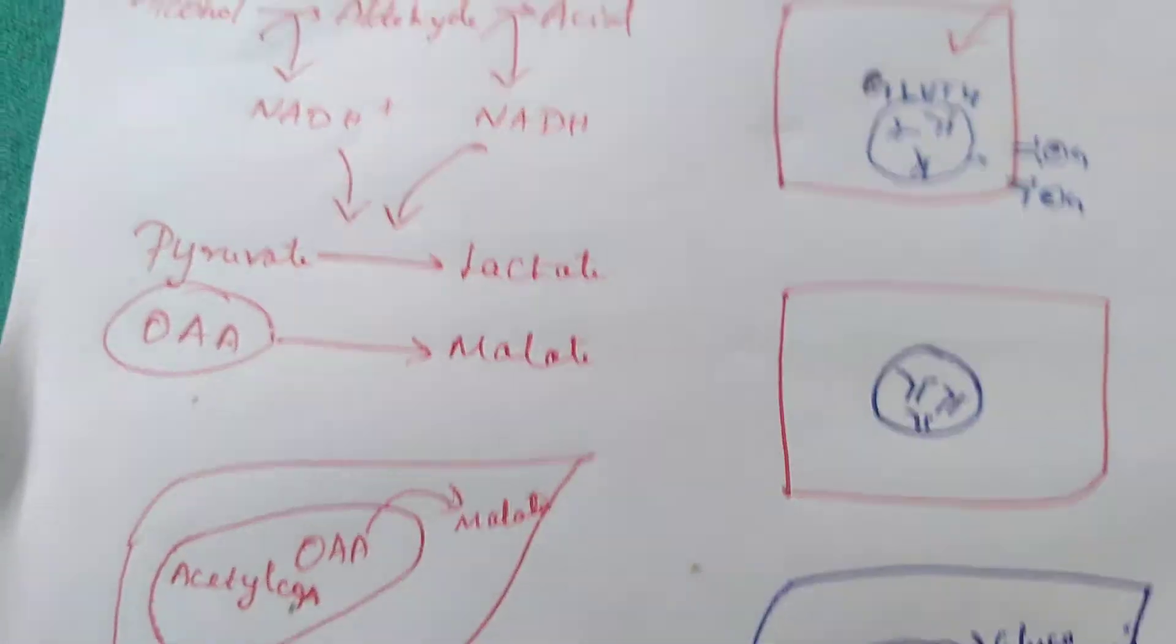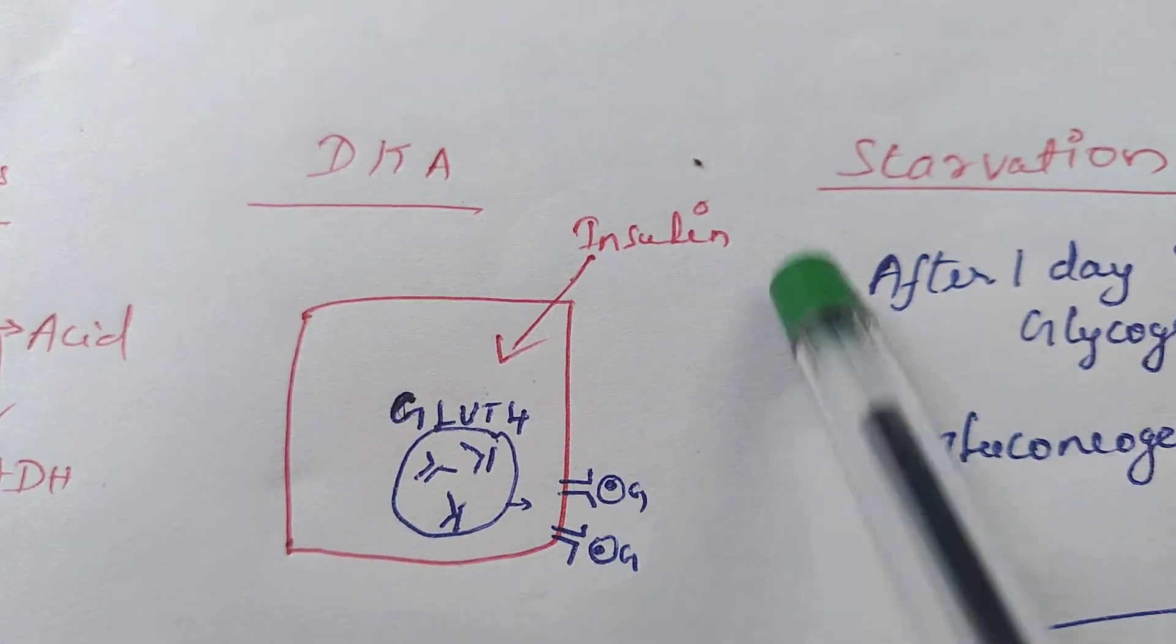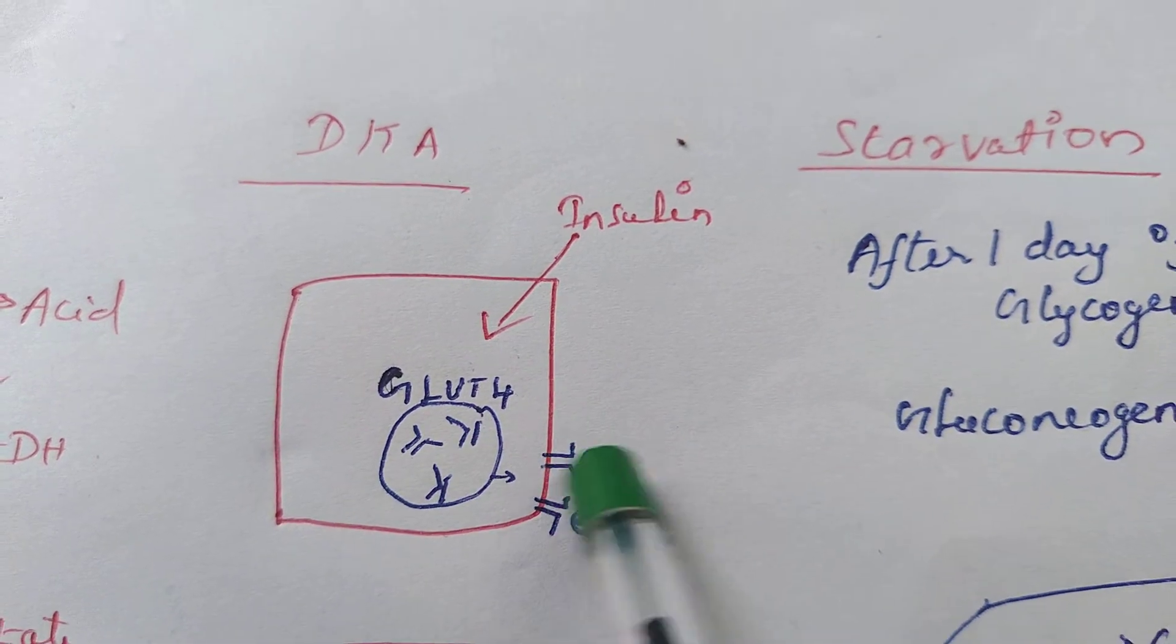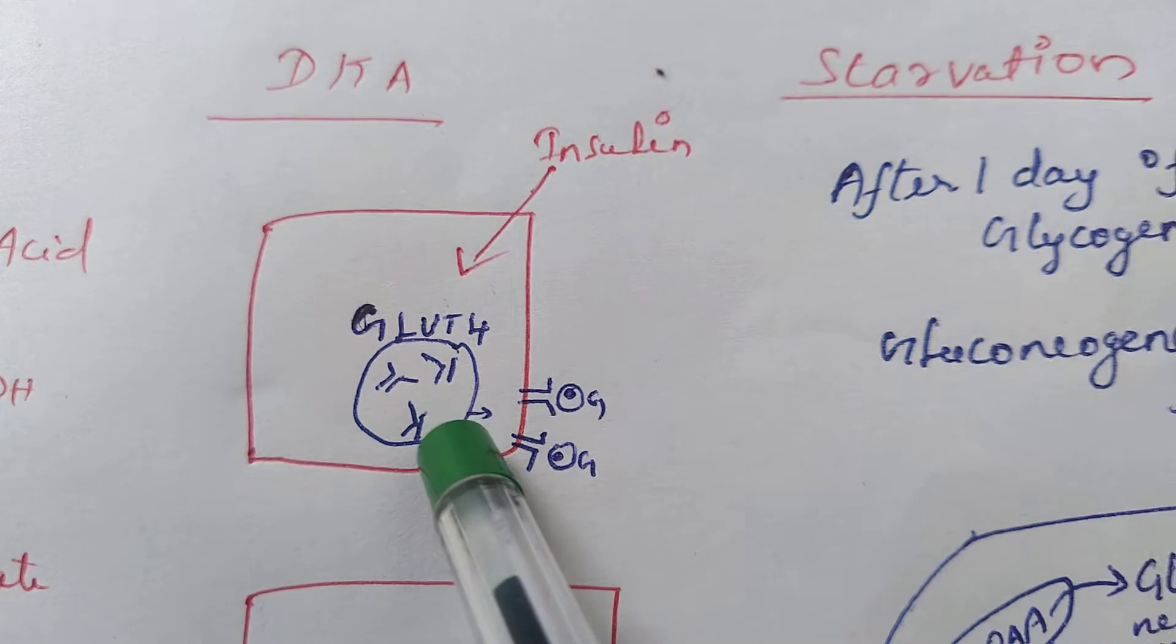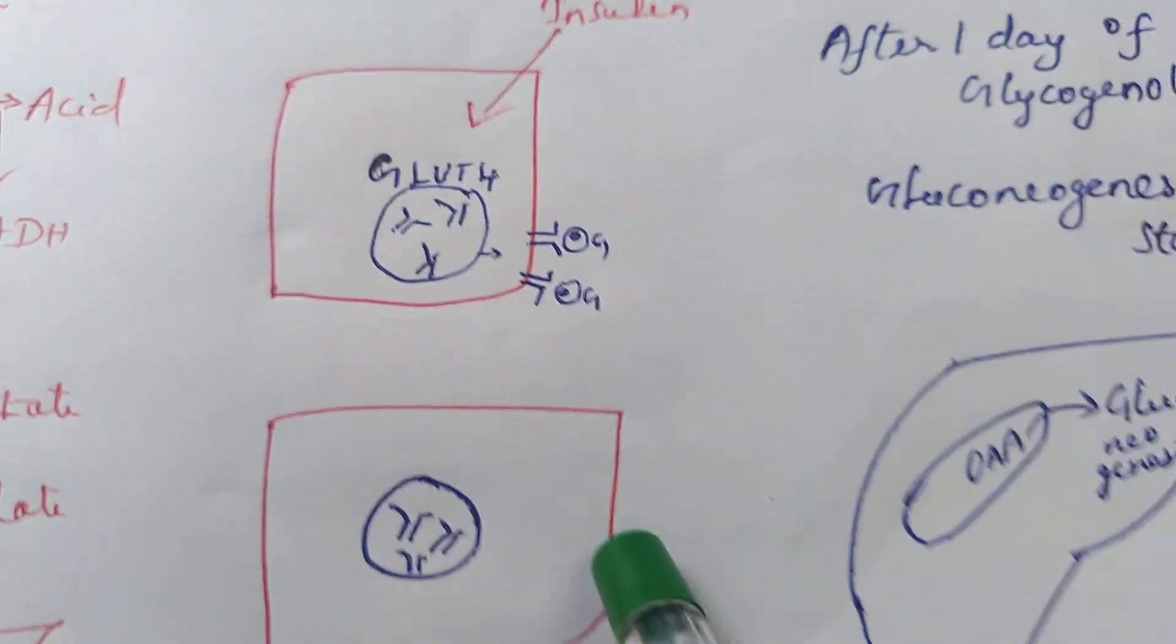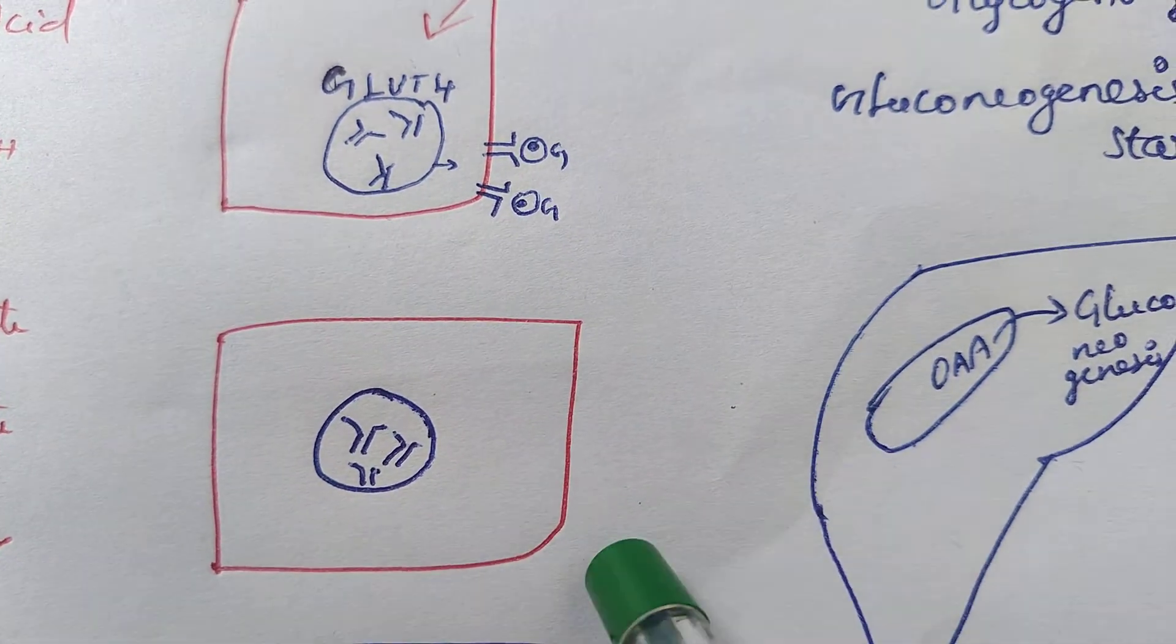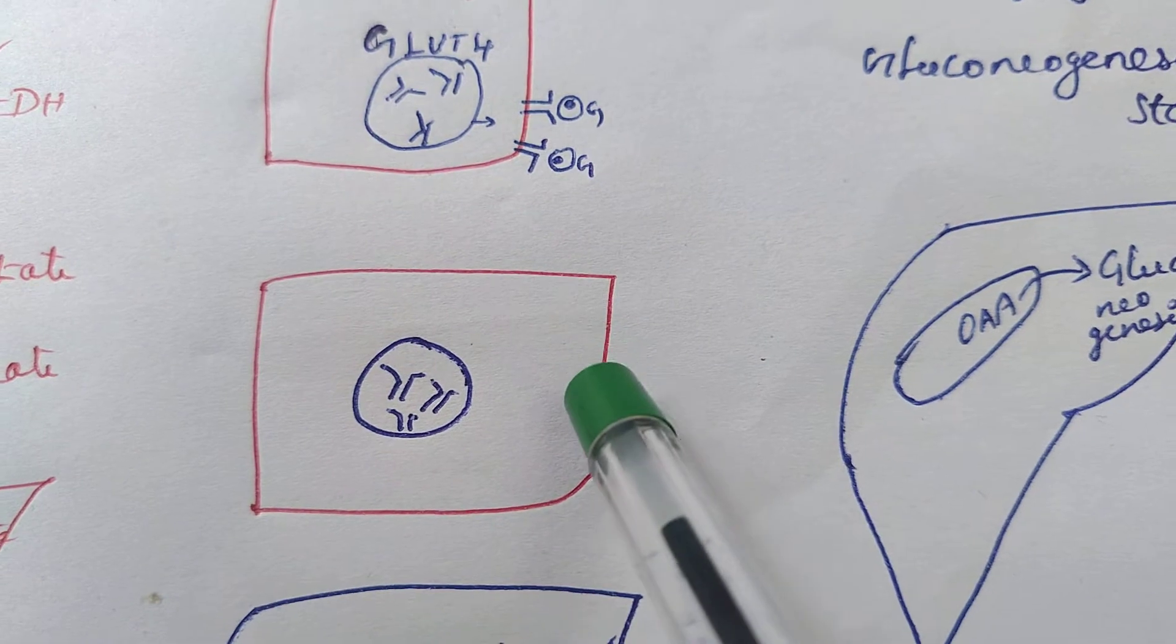In a normal person, insulin helps transport GLUT4 receptors to the surface so that cells will take up glucose from the blood. If insulin is absent, GLUT4 receptors won't come to the surface, so glucose flooding in the blood won't enter the cells. Our cells will think the body is in hypoglycemia and should start gluconeogenesis.